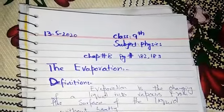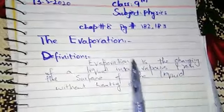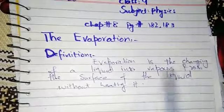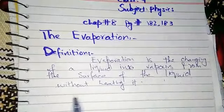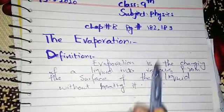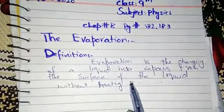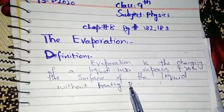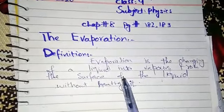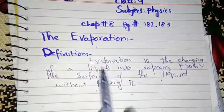Evaporation is the changing of liquid into vapors — vapors mean gaseous state — from the surface of the liquid, without heating it. If you add some water in a dish and put it on a table, you will see that the water will evaporate in a little time into the atmosphere. This is evaporation — not evaporization, this is evaporation.